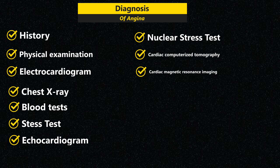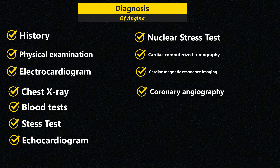Cardiac magnetic resonance imaging (MRI) uses magnetic fields and radio waves to create detailed images of the heart. You typically lie on a table inside a long tube-like machine that produces detailed images of the heart structure and blood vessels. Coronary angiography uses X-ray imaging to examine the inside of the heart's blood vessels and is part of a general group of procedures known as cardiac catheterization.